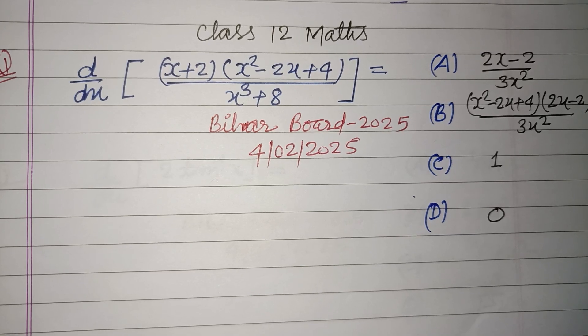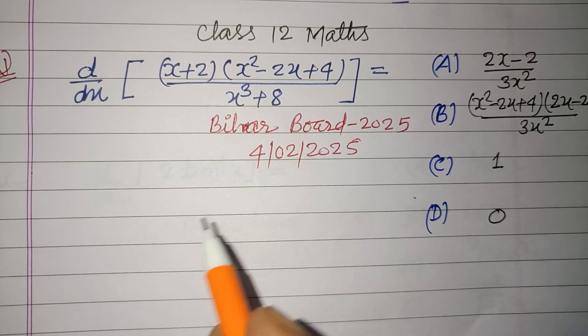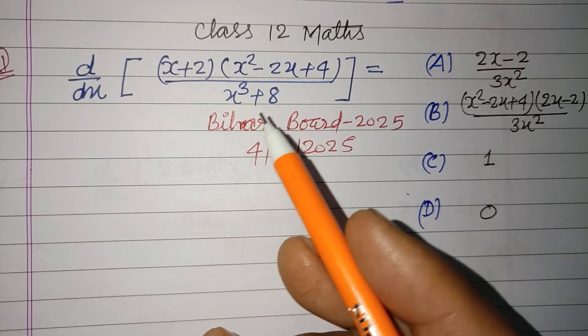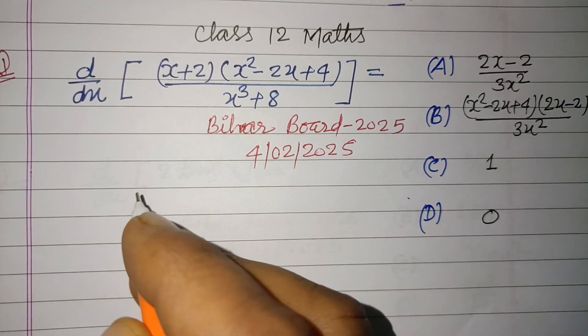Question from Bihar Board 2025 held on 4 February 2025: d/dx of (x+2)(x²-2x+4) upon x³+8.